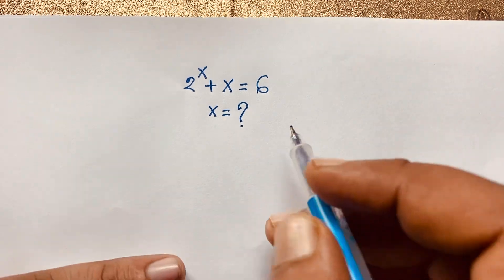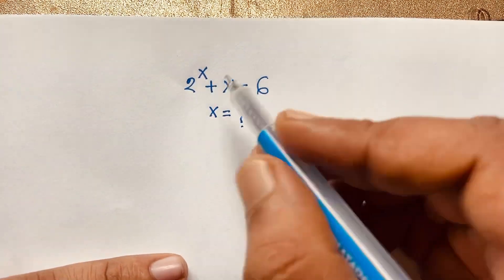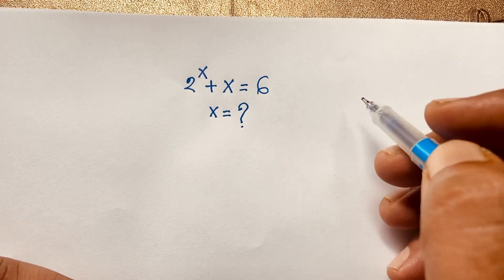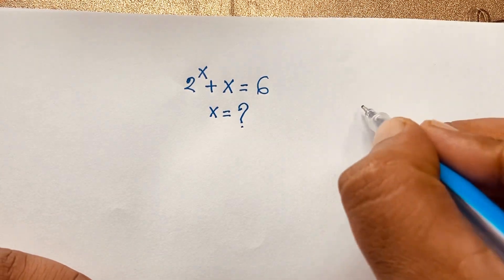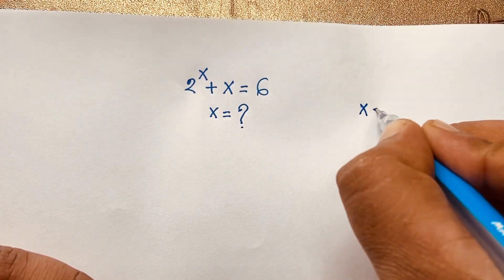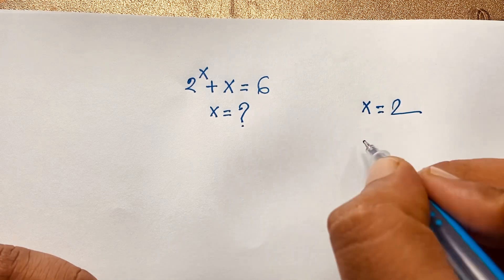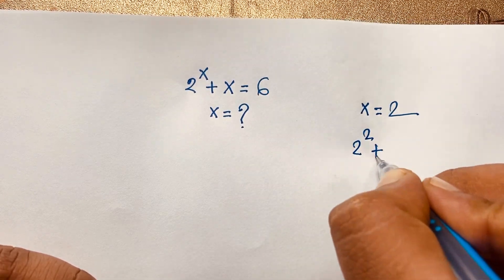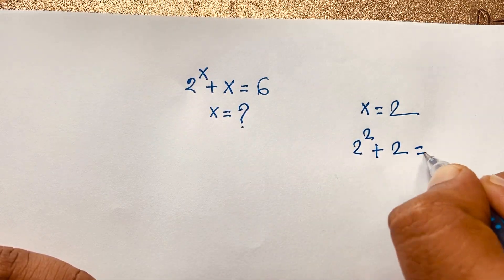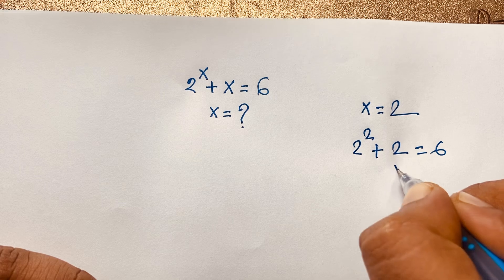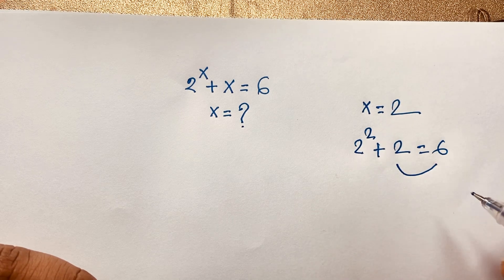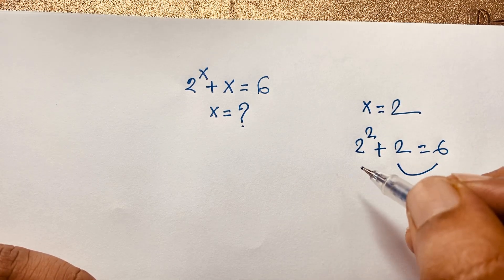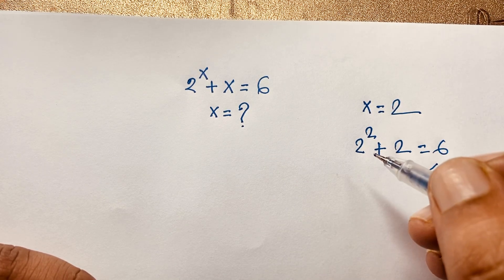First of all, if you think x is equal to 1, so 2 to the power 1 plus 1 is 3, and 3 is not equal to 6. But if you think x is equal to 2, you can see easily: 2 to the power 2 plus 2 is 4 plus 2, which is 6. So left hand side and right hand side are equal, so x is equal to 2. This is our final answer in this exponential expression.